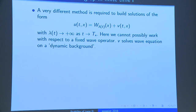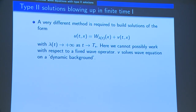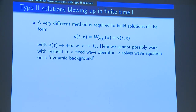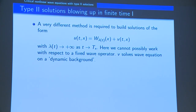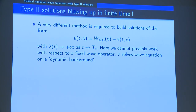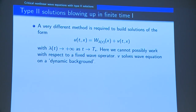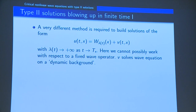Now, how about constructing type 2 solutions which blow up in finite time? Clearly something very different has to be done. The reason is that such a solution will have to be of the form w_{λ(t)}(x) + v(t,x), where λ here is going to vary a lot. So we do not expect to be able to well-approximate such functions as solutions of a wave equation with a fixed reference wave operator. Before, λ(t) was varying very little; in this case, we expect λ(t) to be varying enormously.